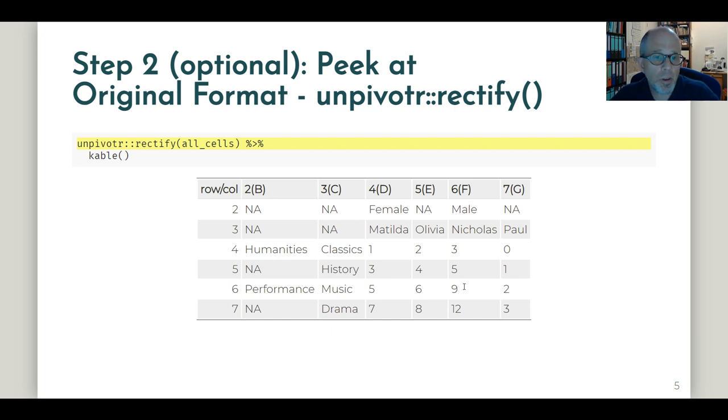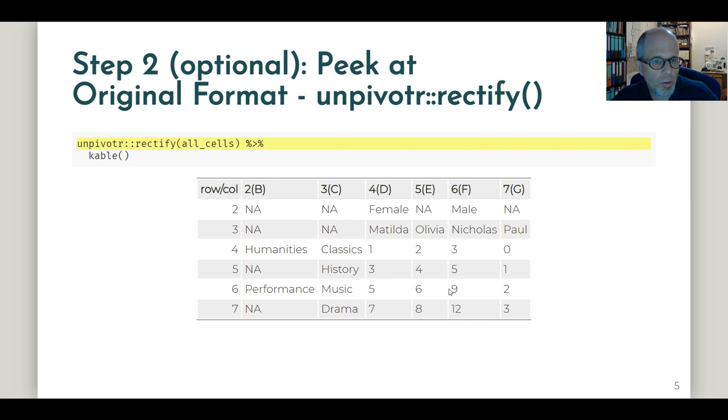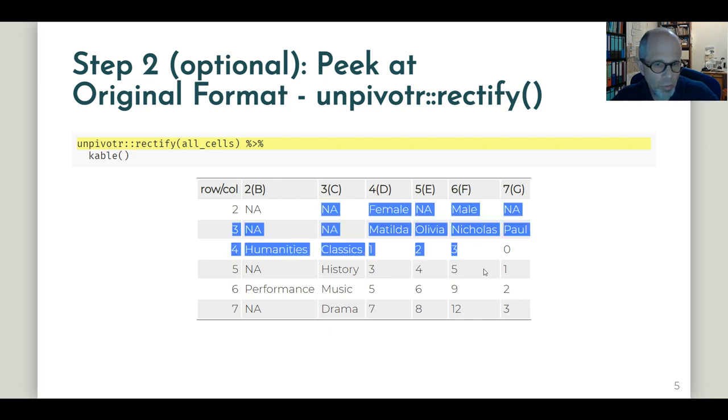There's a convenience function in the unpivotr package called rectify. So using that, we get a layout that mocks this original Excel format with rows and columns, and we see this pivot table here.